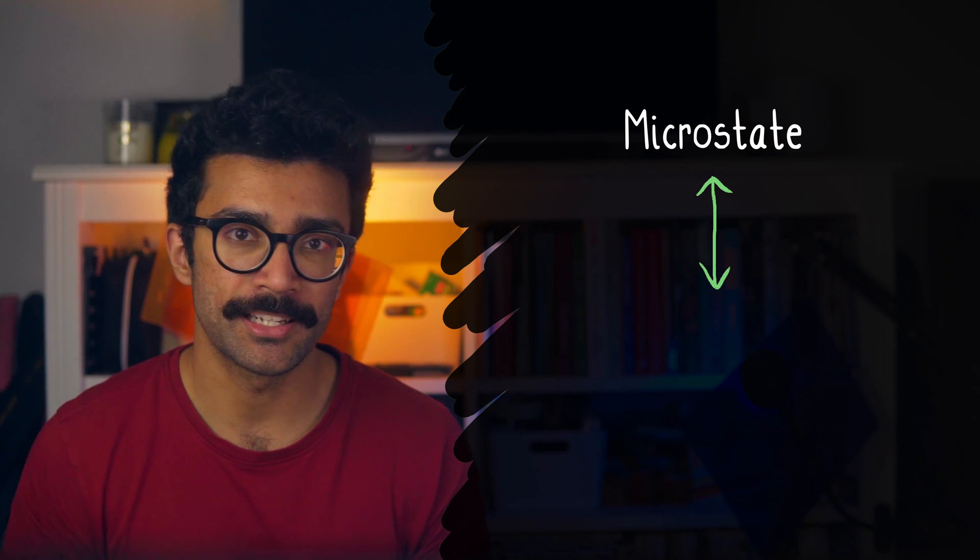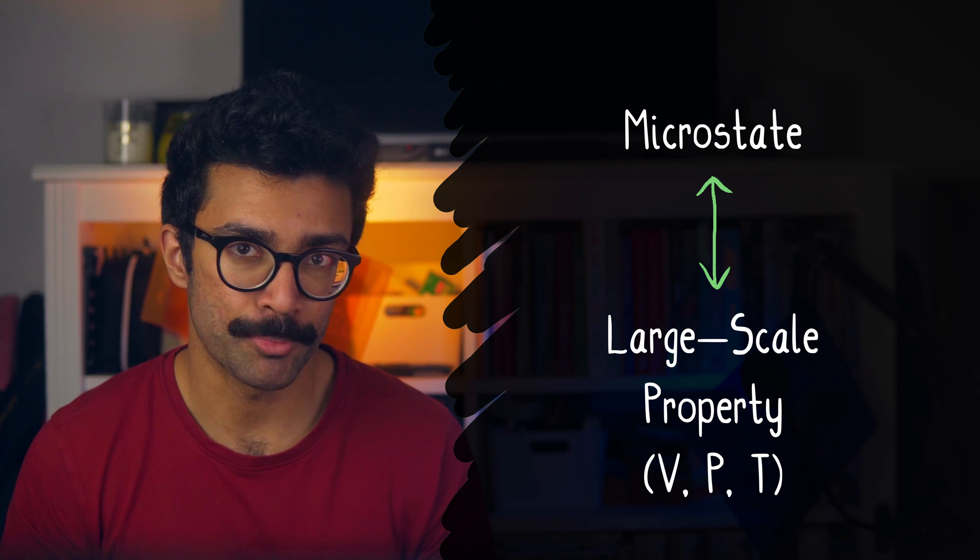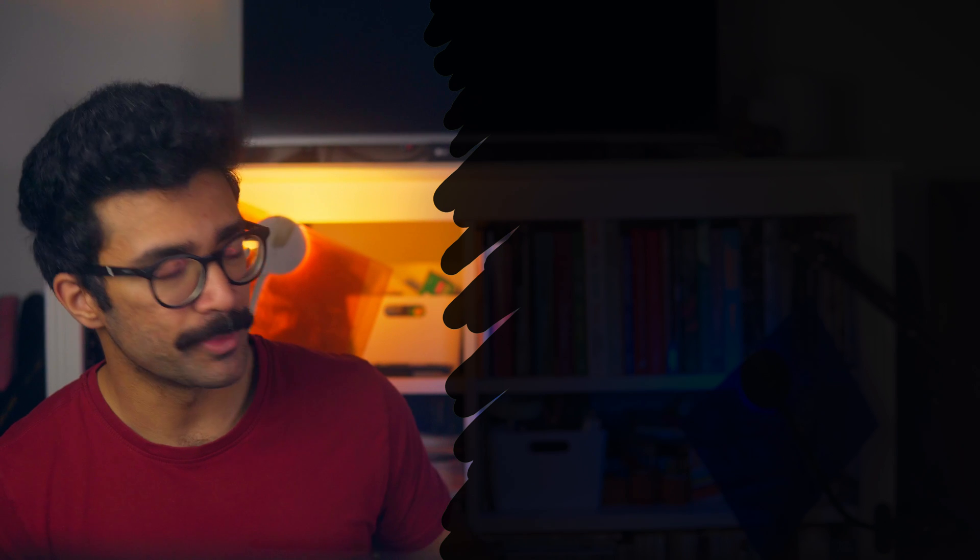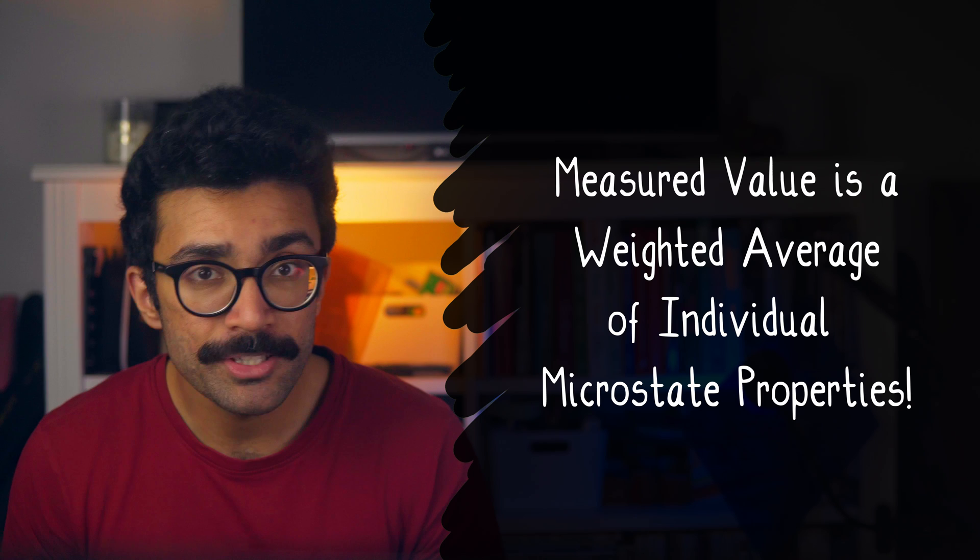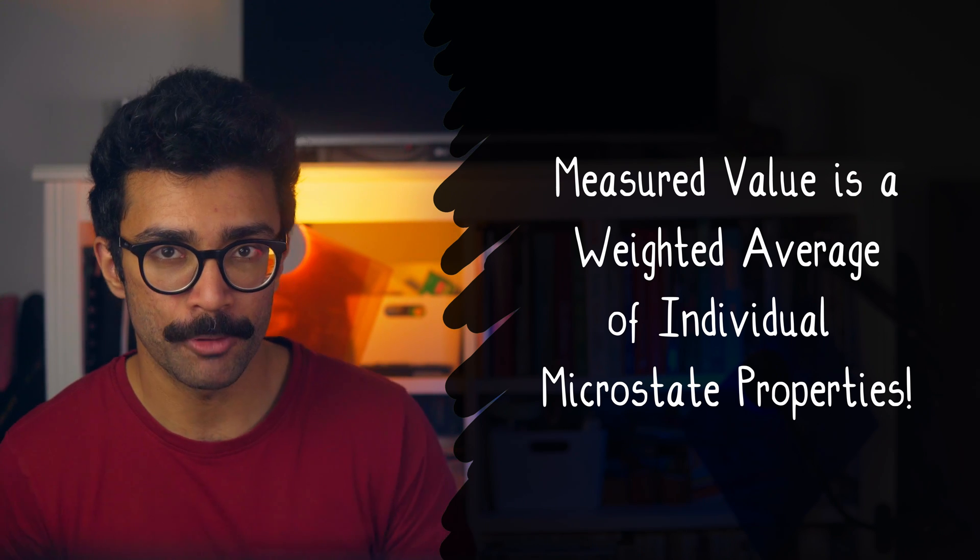So, we need a way to link our small-scale mathematical model with our large-scale measurable properties. And rather interestingly, our second postulate or second assumption for statistical mechanics says that if our system is in a particular microstate, then we can link this to a particular large-scale property of our system. And we can do that for each of the large-scale properties. Beyond that, it also says that when we make a measurement of one of these properties over some period of time, and we find our gas to have a particular volume, or particular pressure, or particular temperature, this measured value is a weighted average of the individual microstate properties.